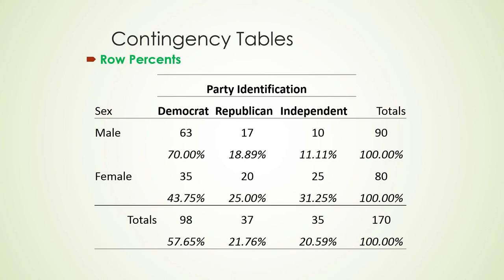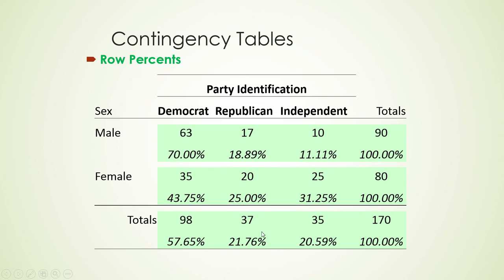Here are some row percents. Each row totals 100%: 70% plus 18.89% plus 11% makes 100%. This shows what percentage of all males or females falls into each category. Democrats make up 63 of 90 males, which is 70% of all males. Independents are 10 of 90 males, 11% of males. We can say 25% of females are Republican, and 21.76% of everybody is Republican. That's what happens when you do percents by rows.